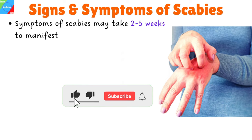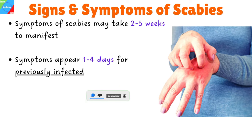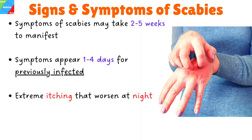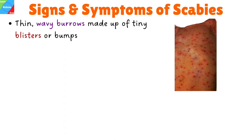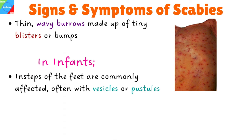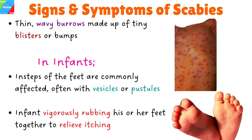What are the signs and symptoms of scabies infestation? The symptoms of scabies may take 2–5 weeks to manifest after the initial exposure. Those who have already experienced scabies typically experience symptoms 1–4 days following exposure, sometimes even sooner. Scabies infestation is extremely pruritic or itchy, and notoriously worse at night. Frequently, other family members also complain of itching. Thin, wavy burrows made up of tiny blisters or bumps on the skin can be seen. In infants, the insteps of the feet are commonly affected, often with vesicles or pustules. An important diagnostic clue is an infant vigorously rubbing his or her feet together to relieve itching.